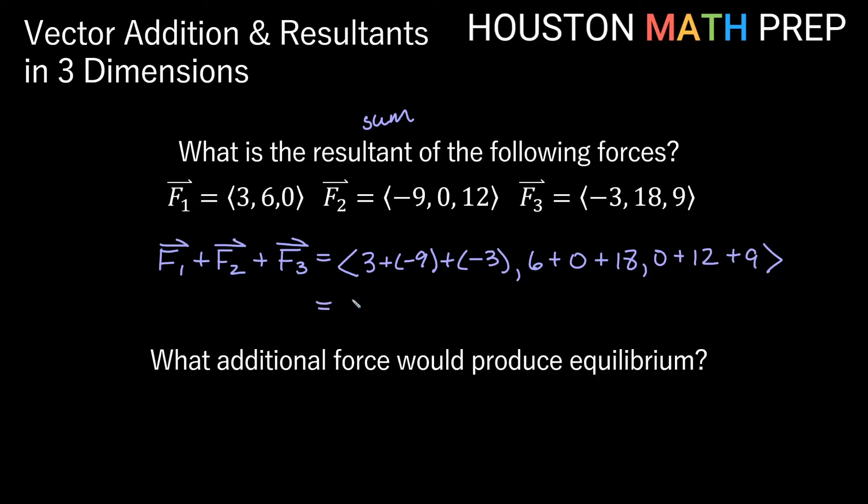So our sum here is just going to be our resultant. So 3 minus 3, that would give us 0. So that would just be negative 9 for the x component here. 6 plus 18 will give us 24 for our y component for our resultant, and then 12 plus 9 will give us 21. So our resultant here of these three forces is the force represented by the vector negative 9, 24, 21.